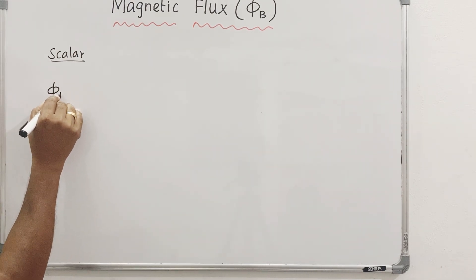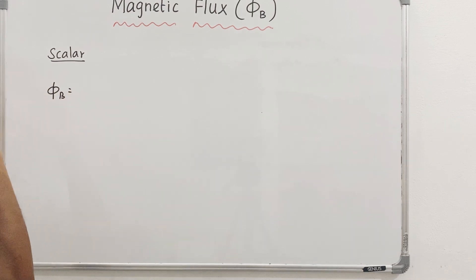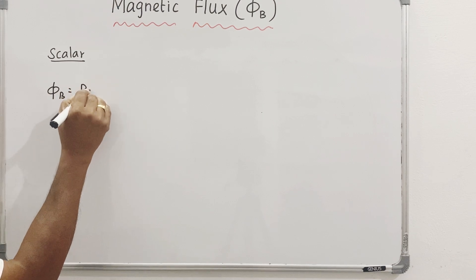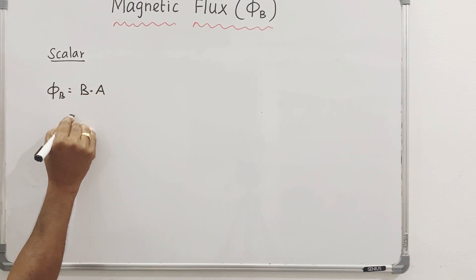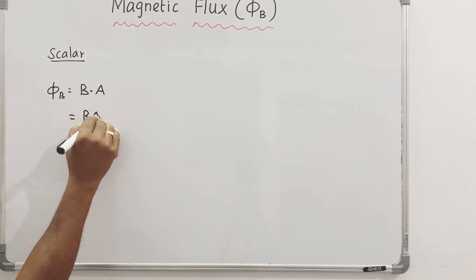What is the formula of phi-B? Similar to phi-E = E dot A, the magnetic flux is phi-B = B dot A, which equals B·A·cosθ.